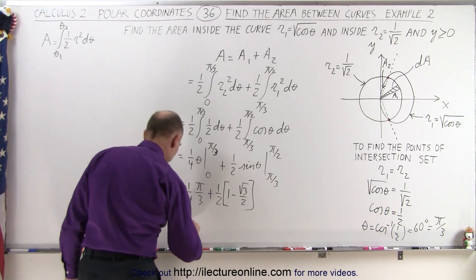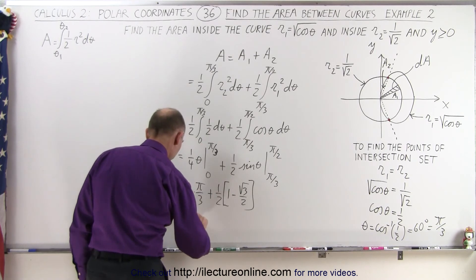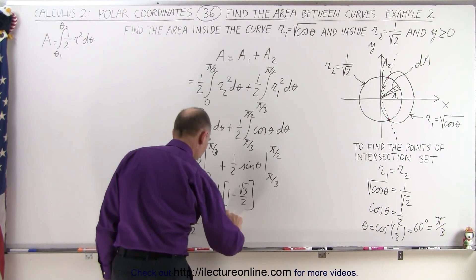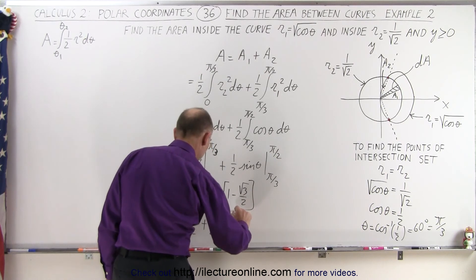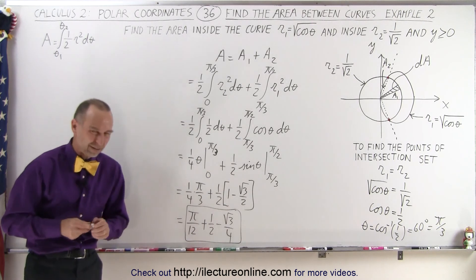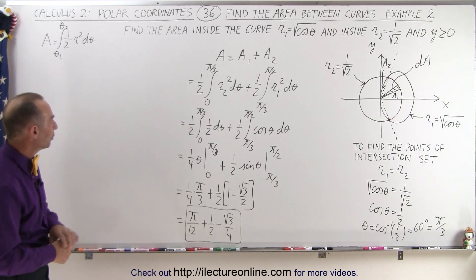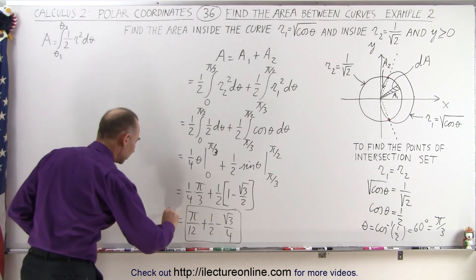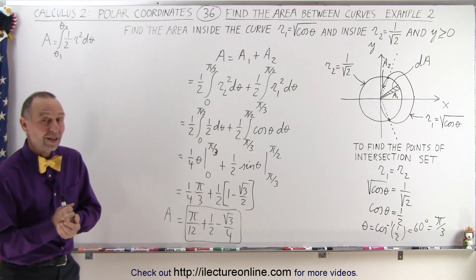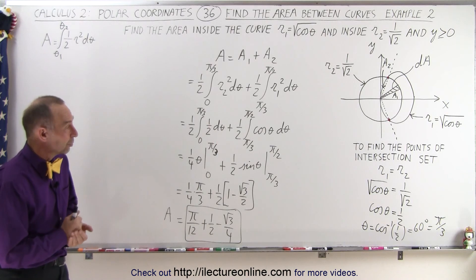And simplifying that a little bit more, so this is equal to pi divided by 12 plus 1 half minus the square root of 3 over 4. And that probably is as simple as we can make it. I guess we could factor out something, but I don't think we need to. So this would be the total area now defined by being inside both curves at the same time and being at the point where y is greater than 0.